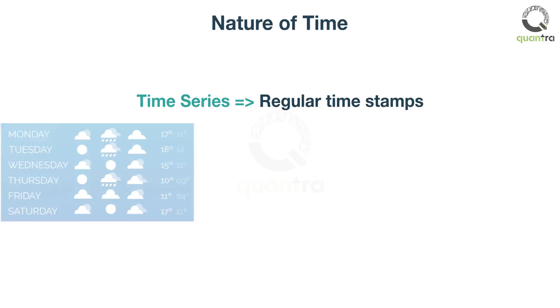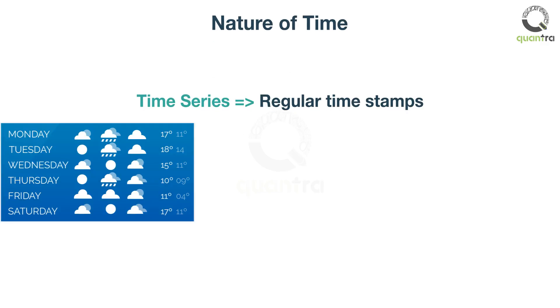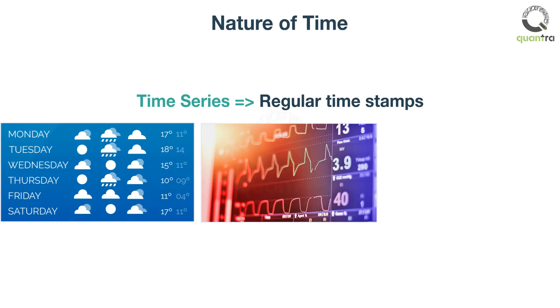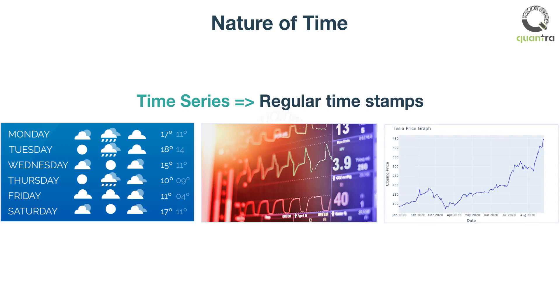A time series is simply data stored at regular time stamps. It could be weather records, it could be patient health monitoring such as in an electrocardiogram (ECG), or it could be financial time series such as prices of a stock.